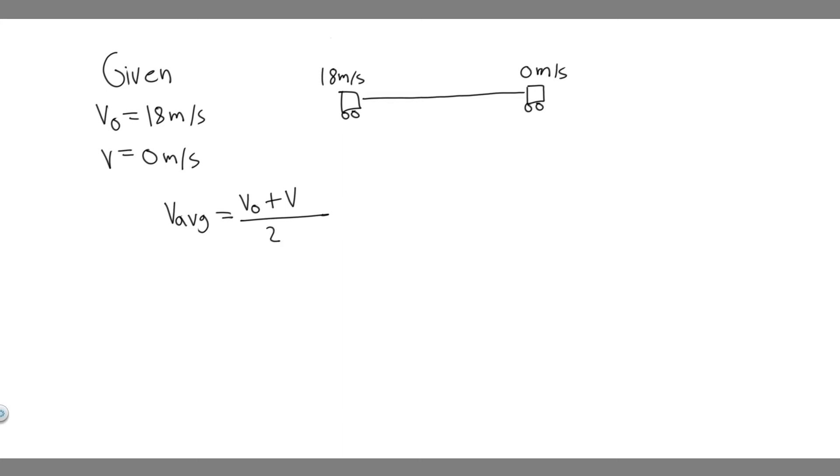We know the initial velocity is going to be 18. Our initial speed, they tell us, is 18. And then we're going to be going to a complete stop. We're going to be slowing down until we stop. And when you stop, your velocity is 0. So they tell us our final velocity equals 0.